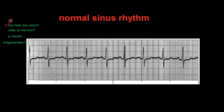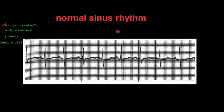It looks like we could pick any of these — they are all relatively the same distance apart. They look the same and have the same shape. Let's pick this one right here because it's actually on a big box line and count how far it is to the next one. We use our 300 method. We would count one, two, three — a little bit more than three but not four big boxes.